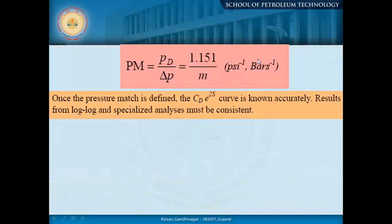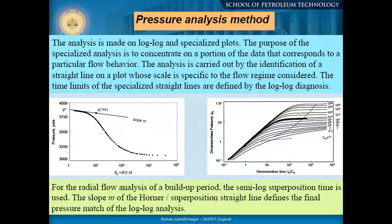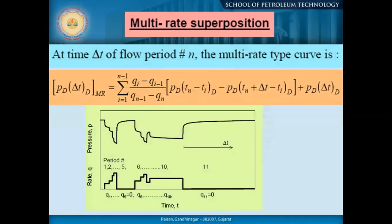Initially, people used to understand the region of flow — if the slope is changing, how it is changing and at what rate. By different approaches people try to get a straight-line domain and non-straight-line domain and get different analyses. From the pressure match we get particularly the slope. Once the pressure match is defined, results from the log-log and specialized analyses must be consistent. We are trying to do two different methods to verify that everything is matching for both cases. These are old methods, but I'm trying to give you an idea of how people initially analyzed by different approaches.